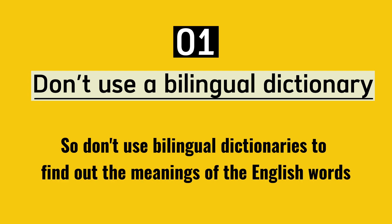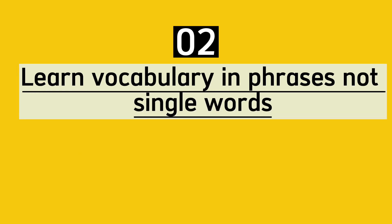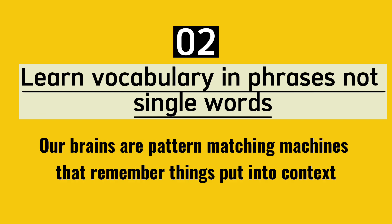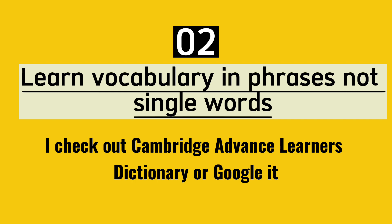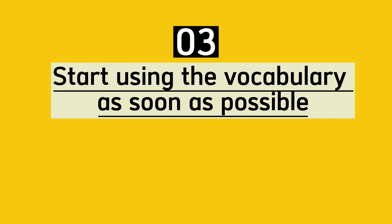Second tip: learn vocabulary in phrases, not single words. Our brains are pattern-matching machines that remember things put into context. If I can't come up with a context example, I check out the Cambridge Advanced Learner's Dictionary or Google it. Third tip: start using the vocabulary as soon as possible.